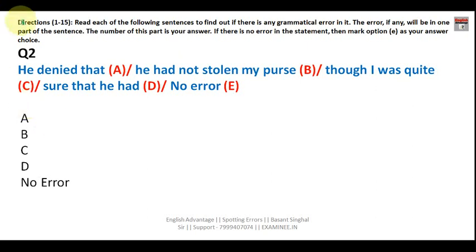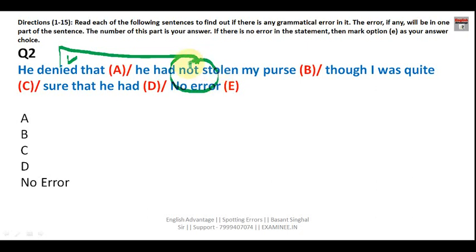Question two: 'He denied that he hadn't stolen my purse.' The sentence structure is okay — something had happened and then he denied it. But notice: 'denied' means to say that something is not true, so 'not' is already included in the word 'denied.' Therefore 'not' should be deleted. Your answer is B. The correct sentence reads: 'He denied that he had stolen my purse.'